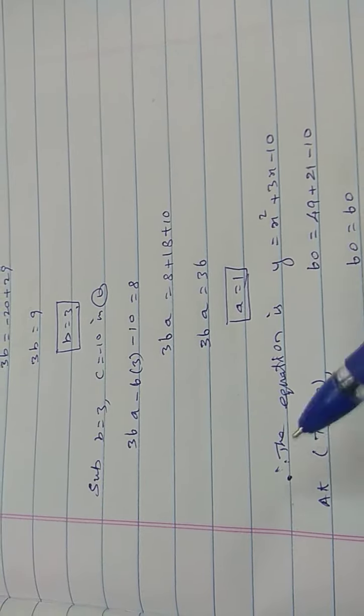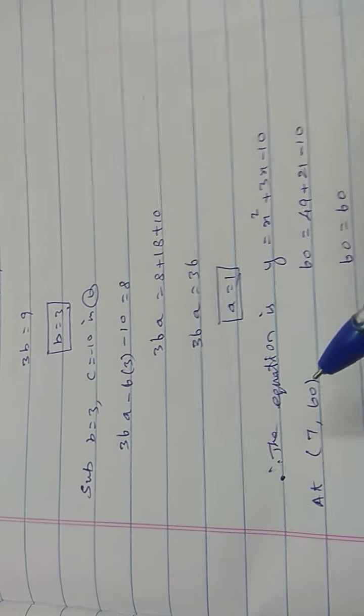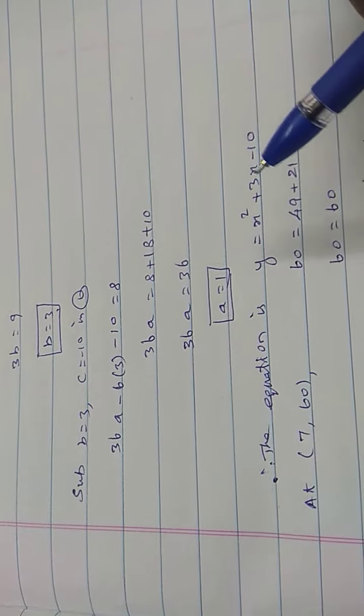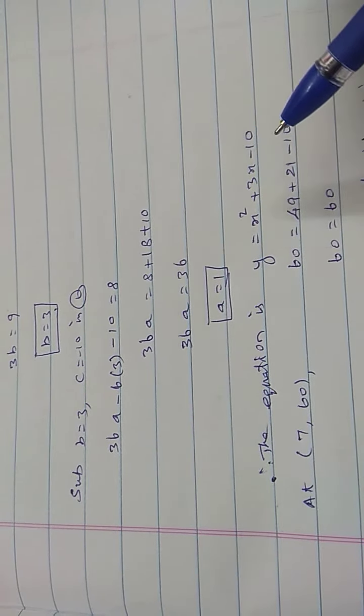At the point (7, 60), x is 7: 49 plus 21 minus 10.